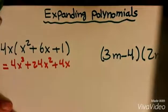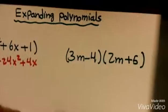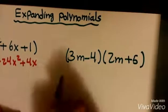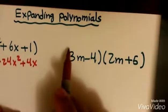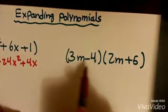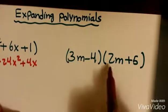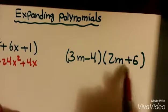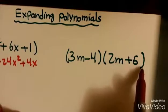The second example I have is 3m minus 4 times 2m plus 5. So, everything in this bracket will times everything in this bracket.